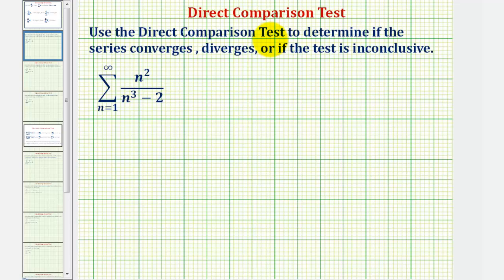We want to use the direct comparison test to determine if the infinite series converges, diverges, or if the test is inconclusive. Before we take a look at our notes, let's determine what series we're going to compare the given series to.